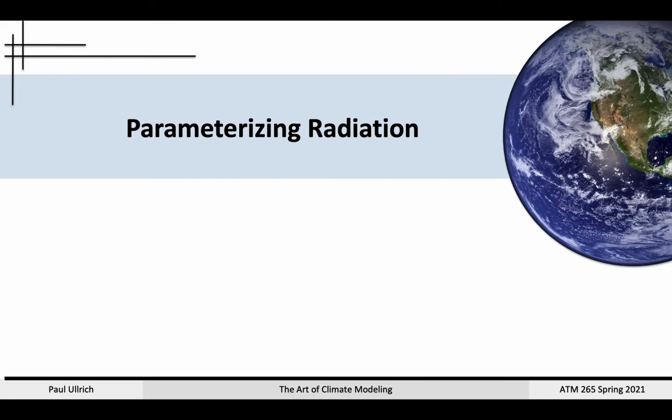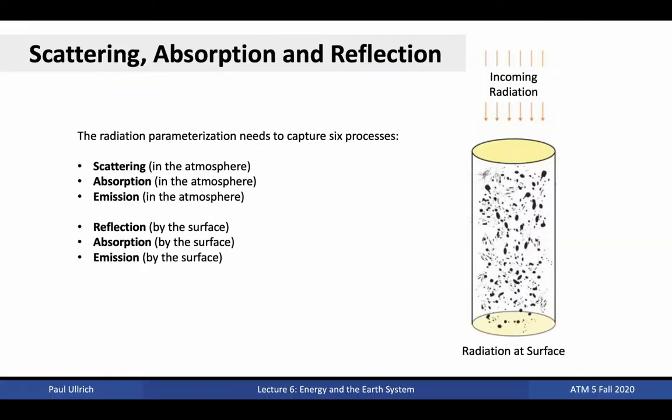Let's now turn our attention to the radiation parametrization, which is designed to capture the effects of solar and terrestrial radiation. Six key processes need to be accounted for by the radiation parametrization. First, we need to account for emission of terrestrial radiation from either the atmosphere or the surface. Then, as the photon travels through the atmosphere, whether it originates from the sun or from the earth, it can be scattered by the atmosphere, absorbed by the atmosphere, reflected by the surface, or absorbed by the surface.